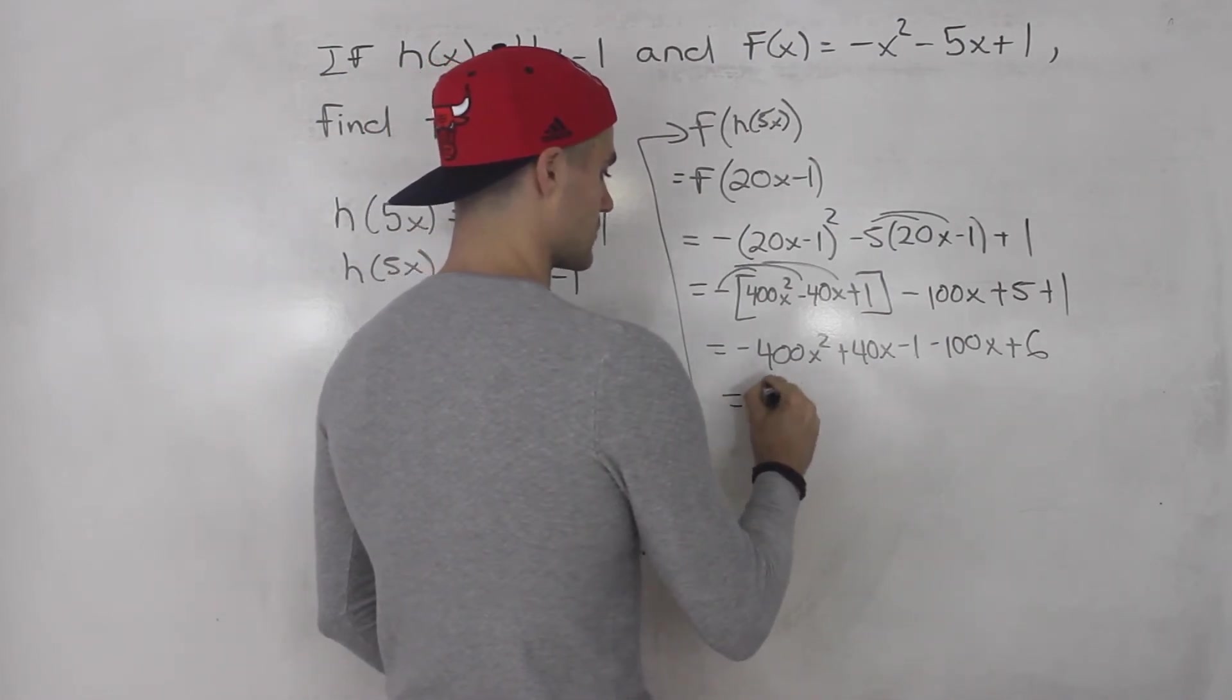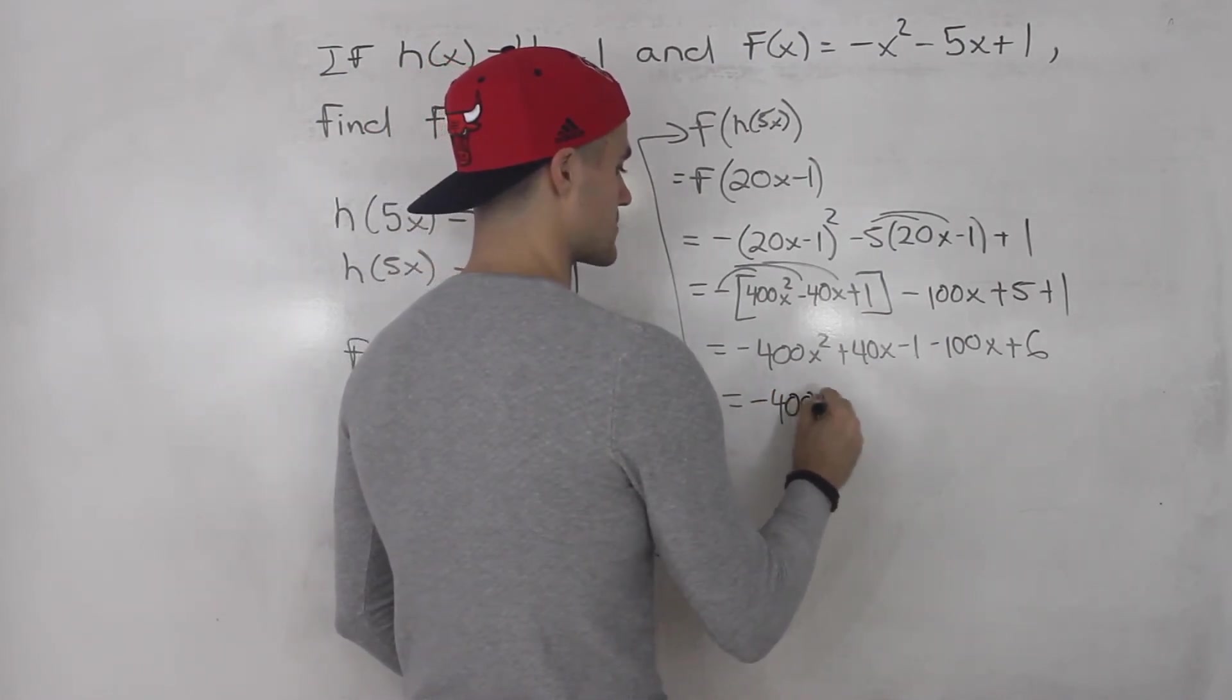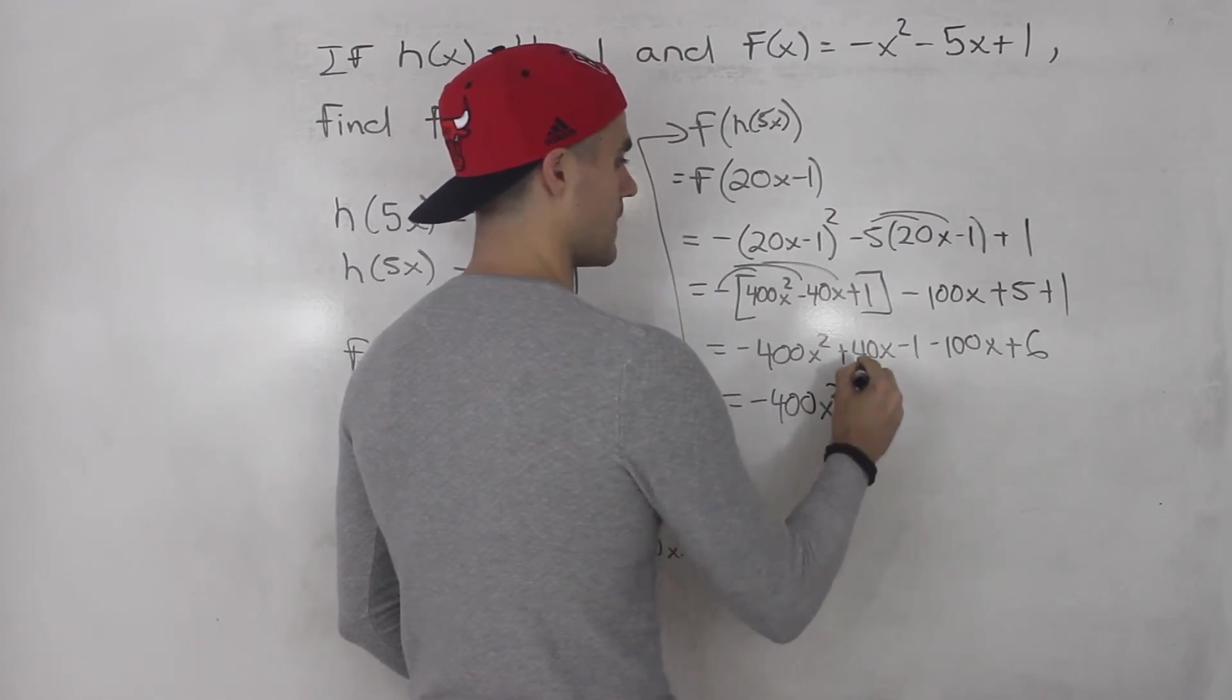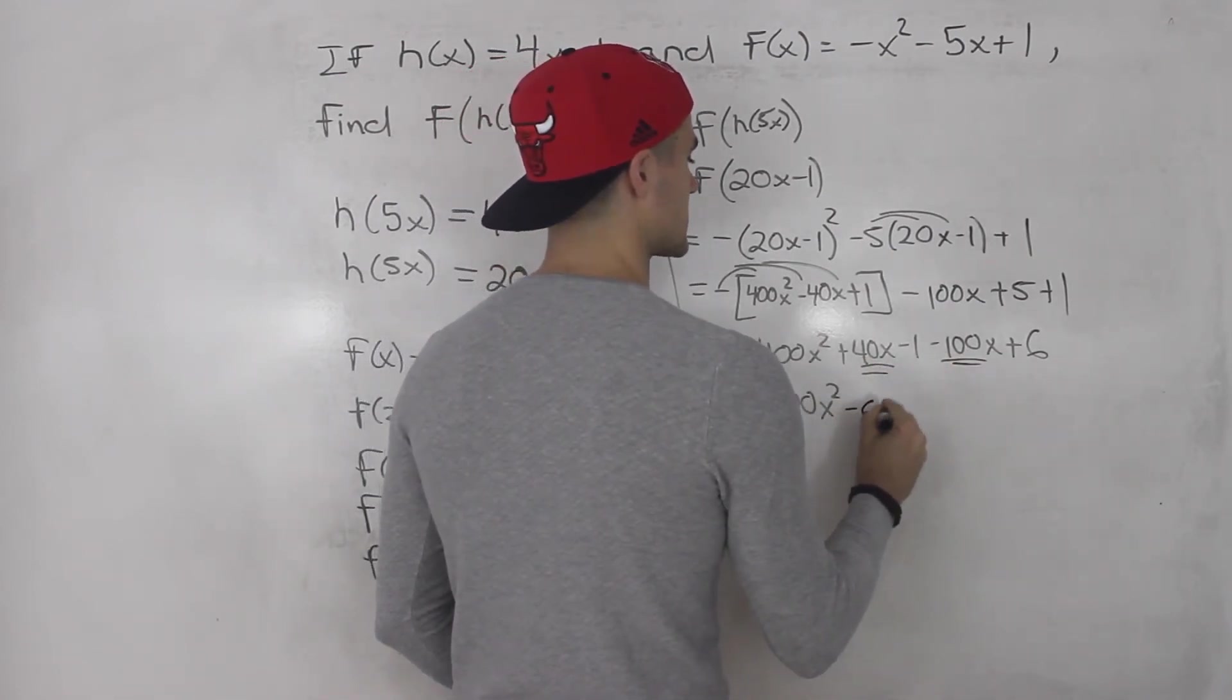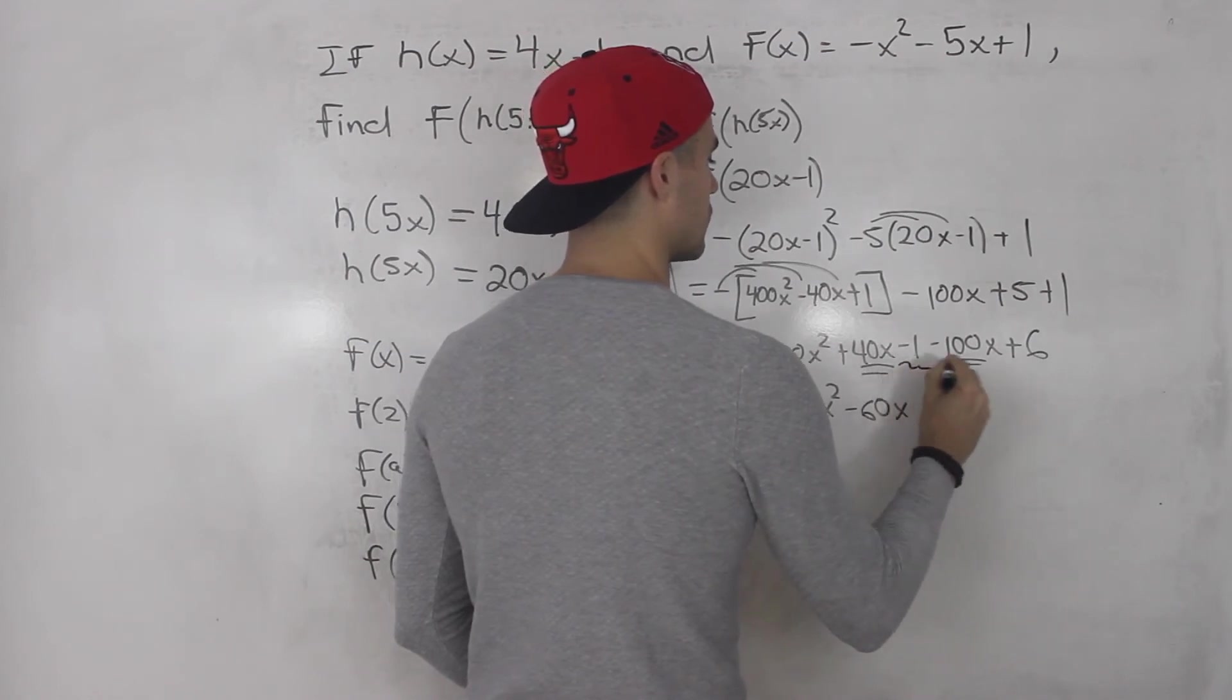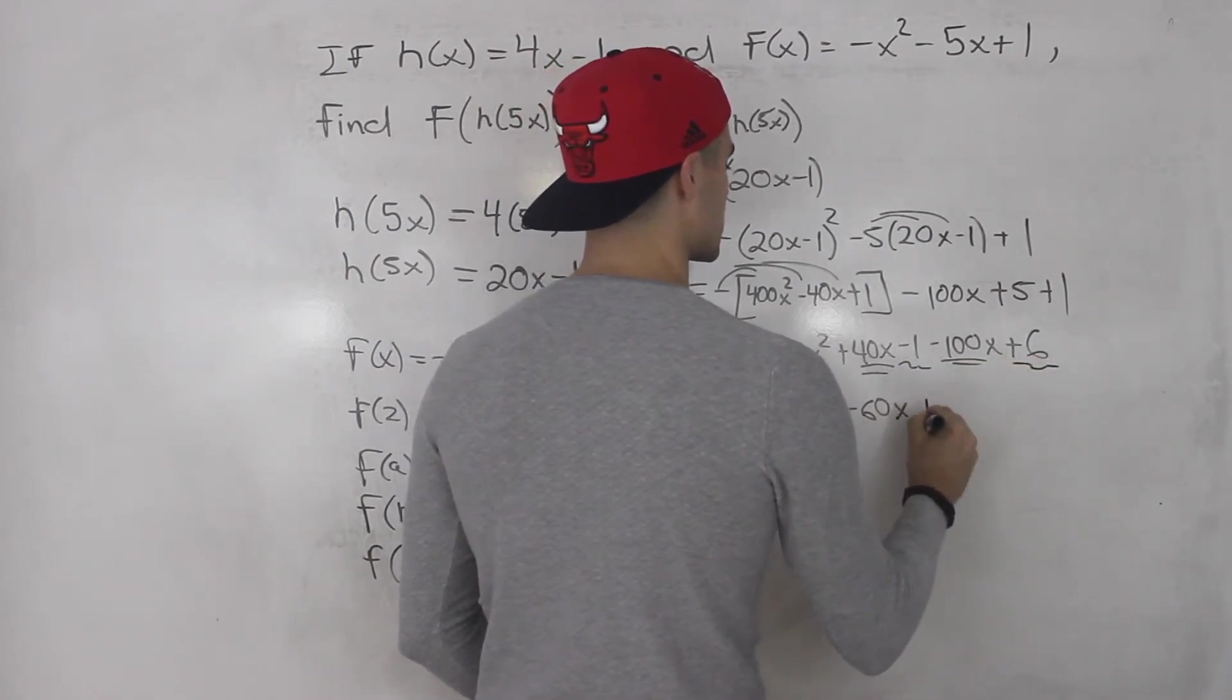So collect all the like terms. -400x² , that's by itself. 40x - 100x gives us -60x. And then -1 + 6 gives us +5.